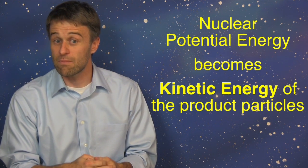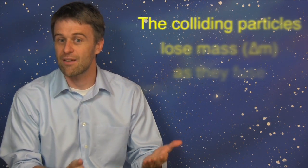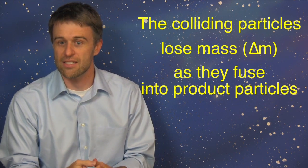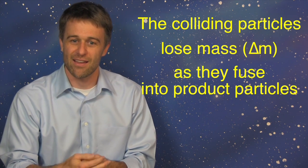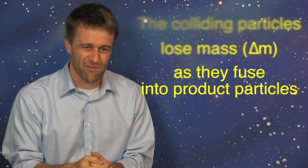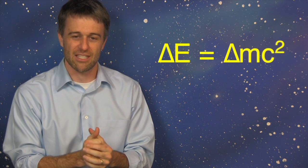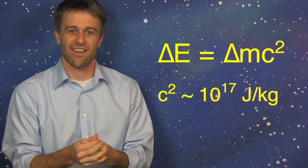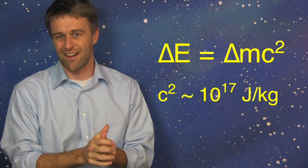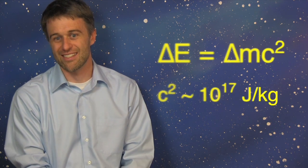Another way that this is measured is in the difference of the mass of the reactants and the products. And this difference in mass, as you may have seen in earlier videos, from Einstein's equation E equals mc squared, there's a big difference in the energies when there's a small difference in the mass.